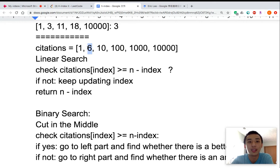For this case, because the paper has 6 citations, which is bigger than the papers on the right side which is 5, we can even find a better solution. We can go left. If we go left, we find that it is 1, so it is smaller than the papers on the right side. So we cannot update the H-index. The final answer of the H-index will be 5.